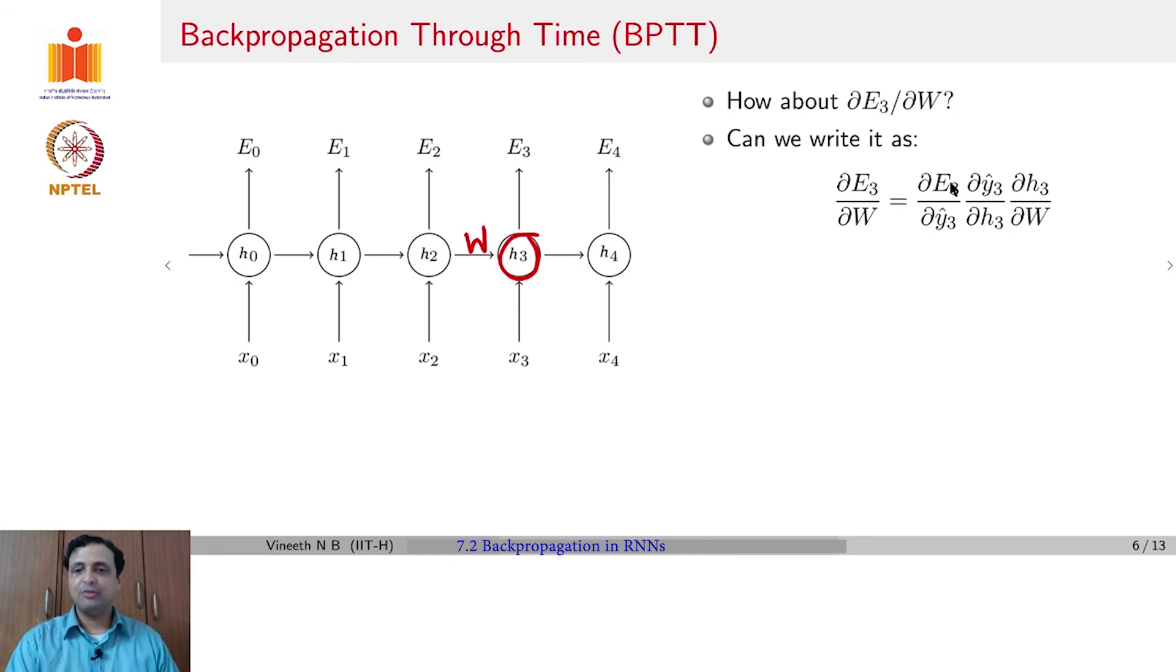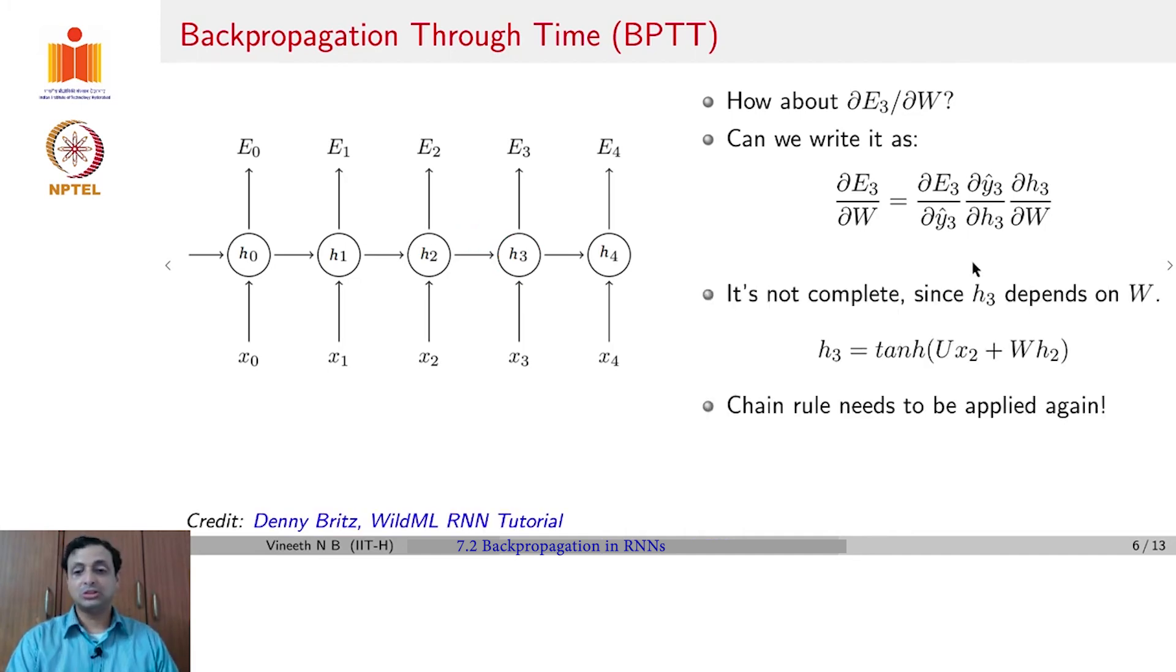The question now is, is this good enough? If we now took this quantity and summed up ∂E_3/∂W plus ∂E_2/∂W and so on, would we have solved ∂E_3/∂W overall? Unfortunately, no. Because while H_3 depends on W, H_3 also depends on H_2, which in turn depends on W again, which means chain rule needs to be applied again to be able to complete this computation of ∂E_3/∂W.